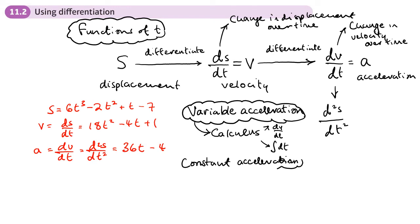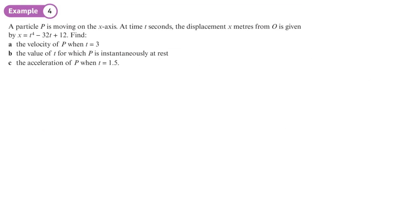A particle is moving on the x-axis, so its movement is along a straight line. At time t, the displacement x from the origin O is given by x = t⁴ - 32t + 12.